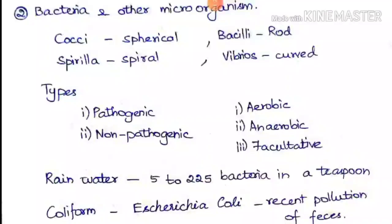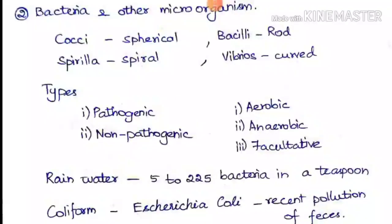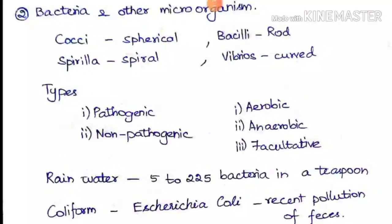The next is bacteria and other microorganisms. Based on the shape of microorganisms, these names are given: cocci if spherical shape, spirilla if spiral, bacilli if rod shape, and vibrios if curved shape.